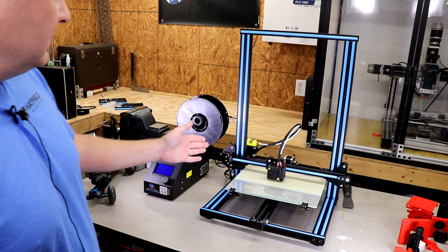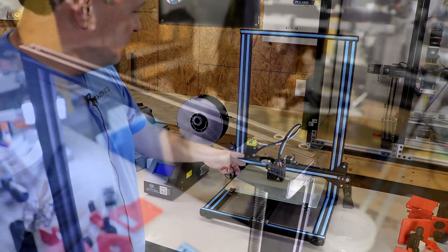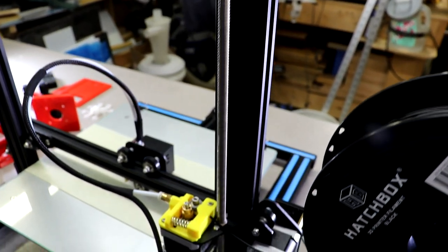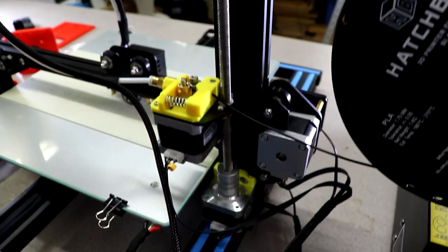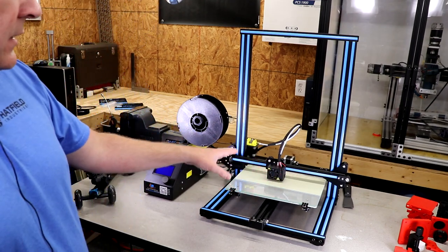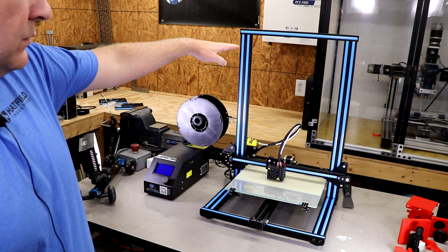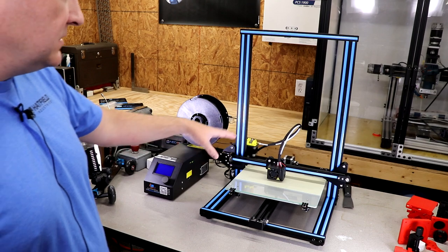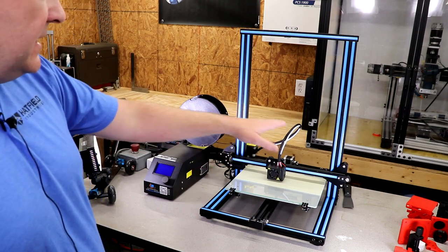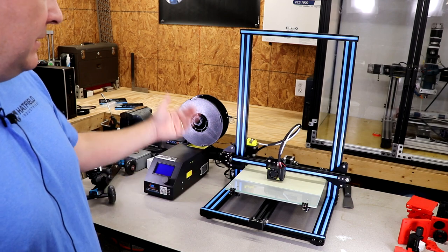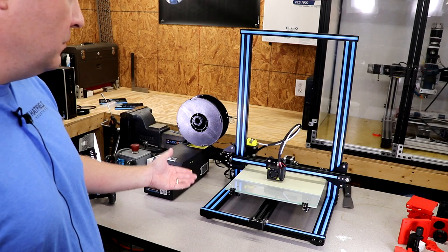This particular unit has one lead screw that drives the z-axis up. That has been mentioned in some forums as being an issue. I can tell you that for me I have not seen sag in the bridge as being an issue. I've printed some fairly tall parts, probably three and a half to four inches tall, and I didn't see any skewing from one side to the other. That may change over time.